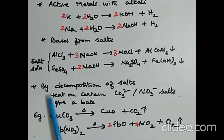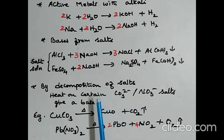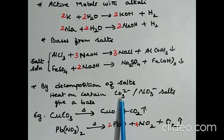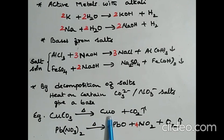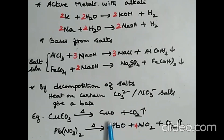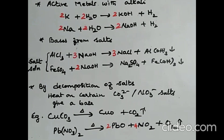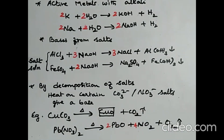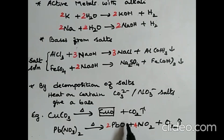The next method is by decomposition of salts. Certain salts on heating produce bases — carbonate salts and nitrate salts. Example: copper 2 carbonate on heating decomposes to produce copper 2 oxide and carbon dioxide; copper 2 oxide is a base. Lead nitrate on heating decomposes to produce lead 2 oxide, nitrogen dioxide, and oxygen; lead 2 oxide is a base prepared from lead nitrate.